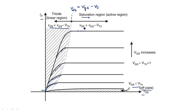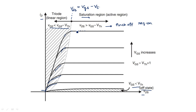When VDS is greater than VGS minus VT, pinch-off occurs and the transistor enters the pinch-off region, where the channel breaks down and no current increases beyond that value. These are the three different regions of the MOSFET transistor: linear region, saturation region, and cutoff region.